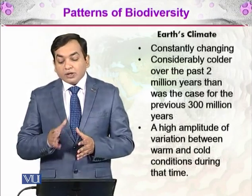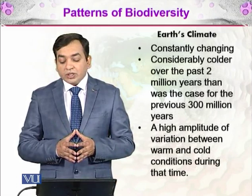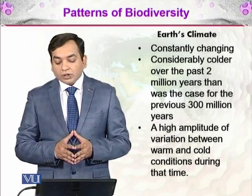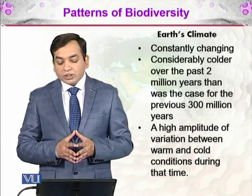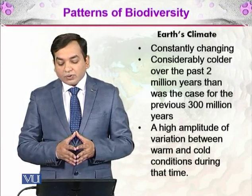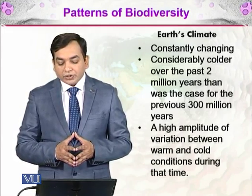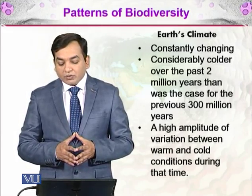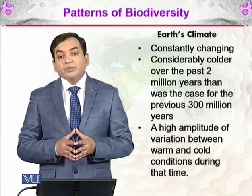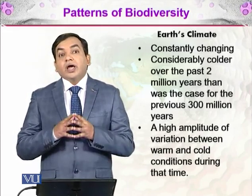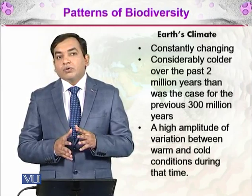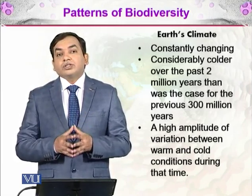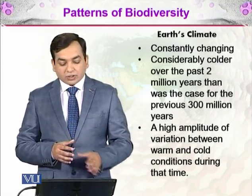The Earth's climate is constantly changing and was considerably colder over the past two million years than it was for the previous three hundred million years. There was a higher amplitude of variation between warm and cold conditions during that time, and due to that high amplitude of warm and cold variations, extinction events were a common occurrence.